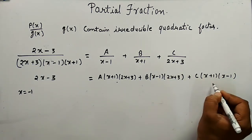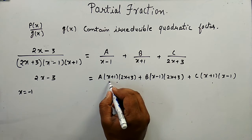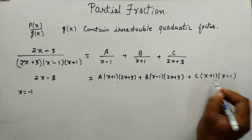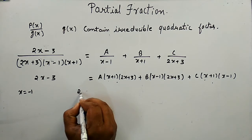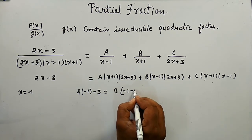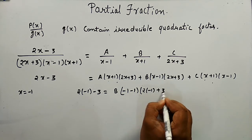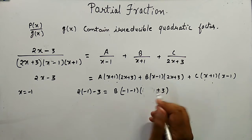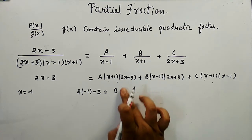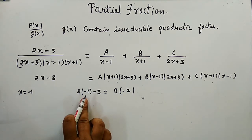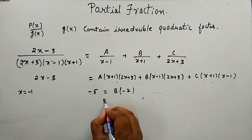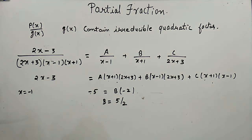Substituting x = -1, the first and third terms become zero because (x + 1) = 0. The equation reduces to: 2(-1) - 3 = B(-1 - 1)(2(-1) + 3), giving -5 = B(-2)(1) = -2B. So B = 5/2.